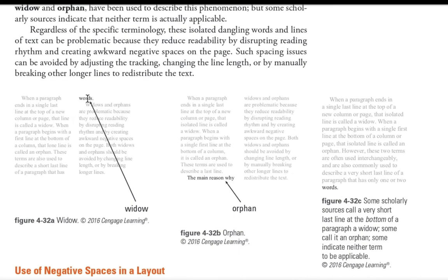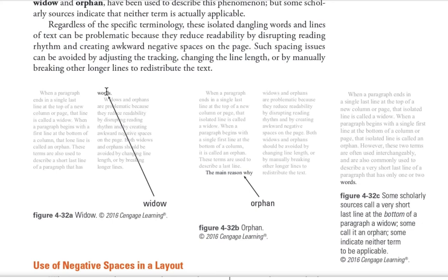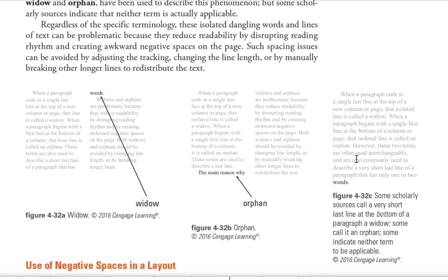Widows and orphans are typographic terms — a widow is a single word at the top of a column left behind; an orphan is the first line of a paragraph starting alone at the bottom of a column without the rest of the paragraph. Sometimes they're called a runt — a single word on its own at the end of a paragraph — which doesn't usually look good. We can use line spacing or small adjustments to pull words up or push them down to avoid these issues.